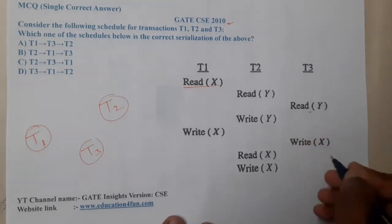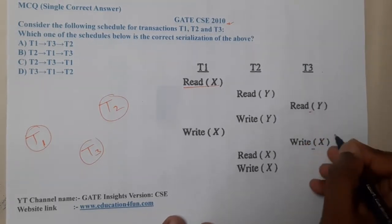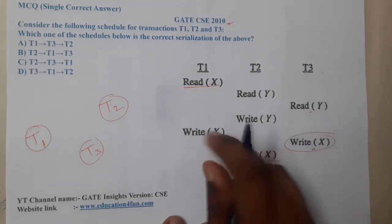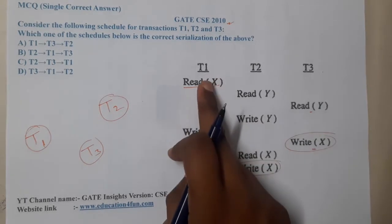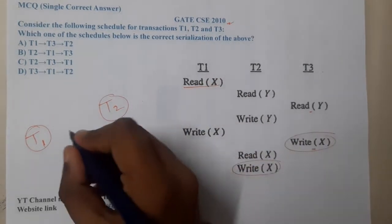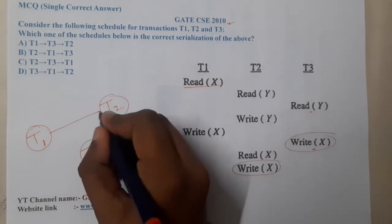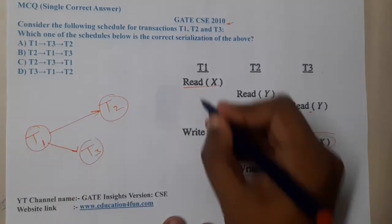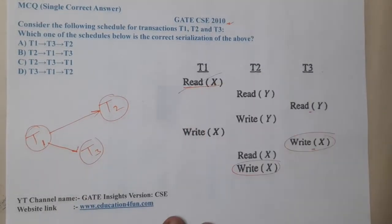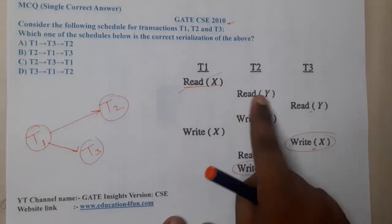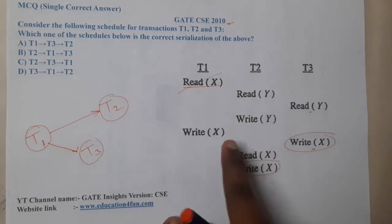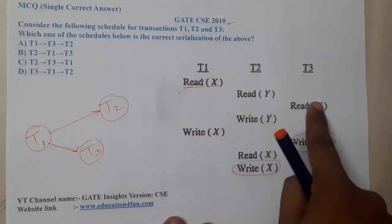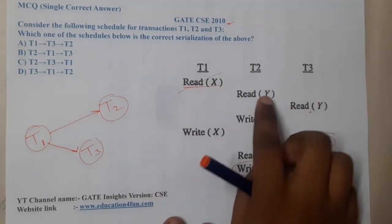Here we are performing read of X. There is also write of X and write of X from other transactions — so T1 has a clash with T2 and T3. Now moving on to read of Y: there is no issue here since it is a read-read situation.